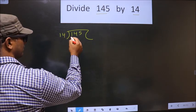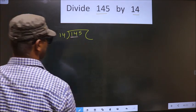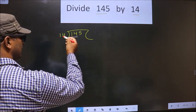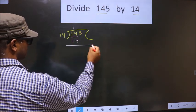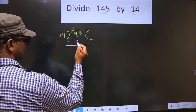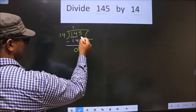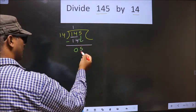Now, here we have 1. 1 is smaller than 14, so we take 2 numbers. That is 14. When do we get 14 in 14 table? 14 once is 14. Now you subtract. 14 minus 14 is 0. Now you take the beside number down. That is 5.